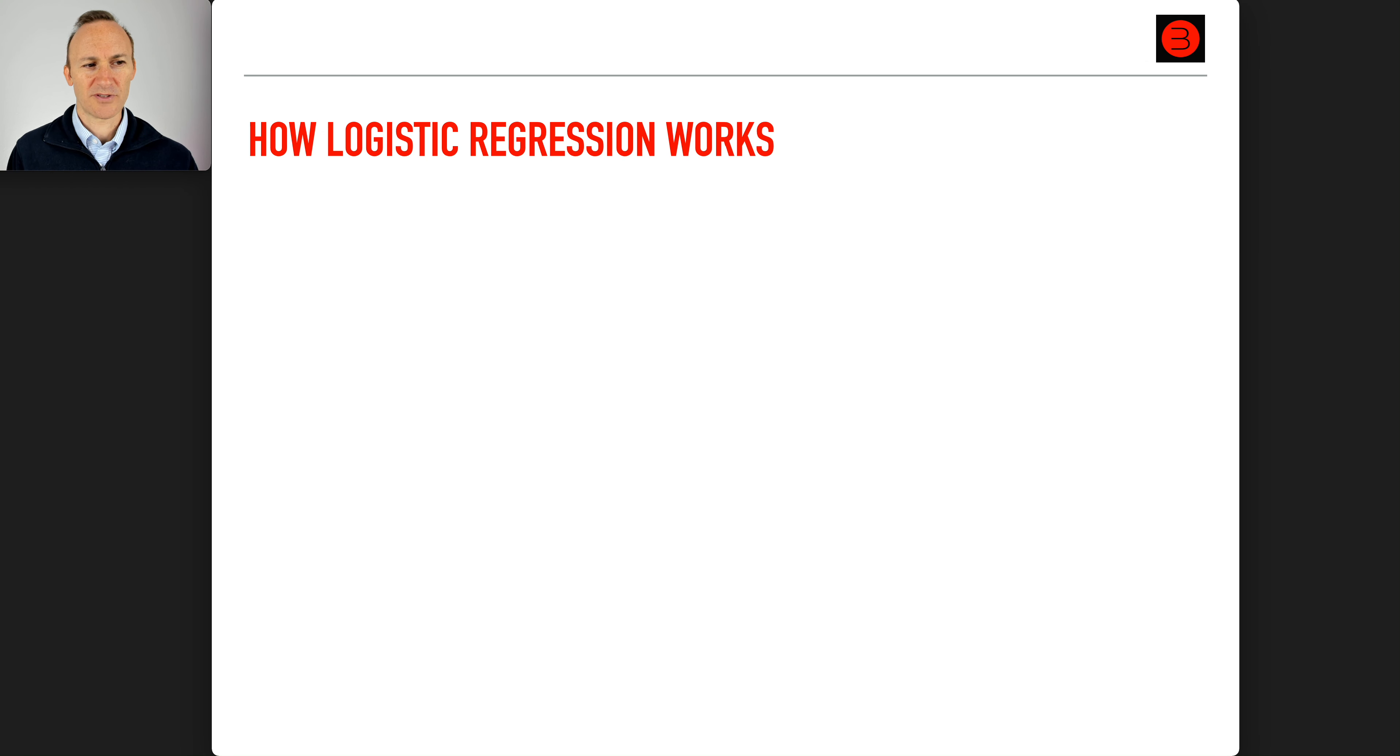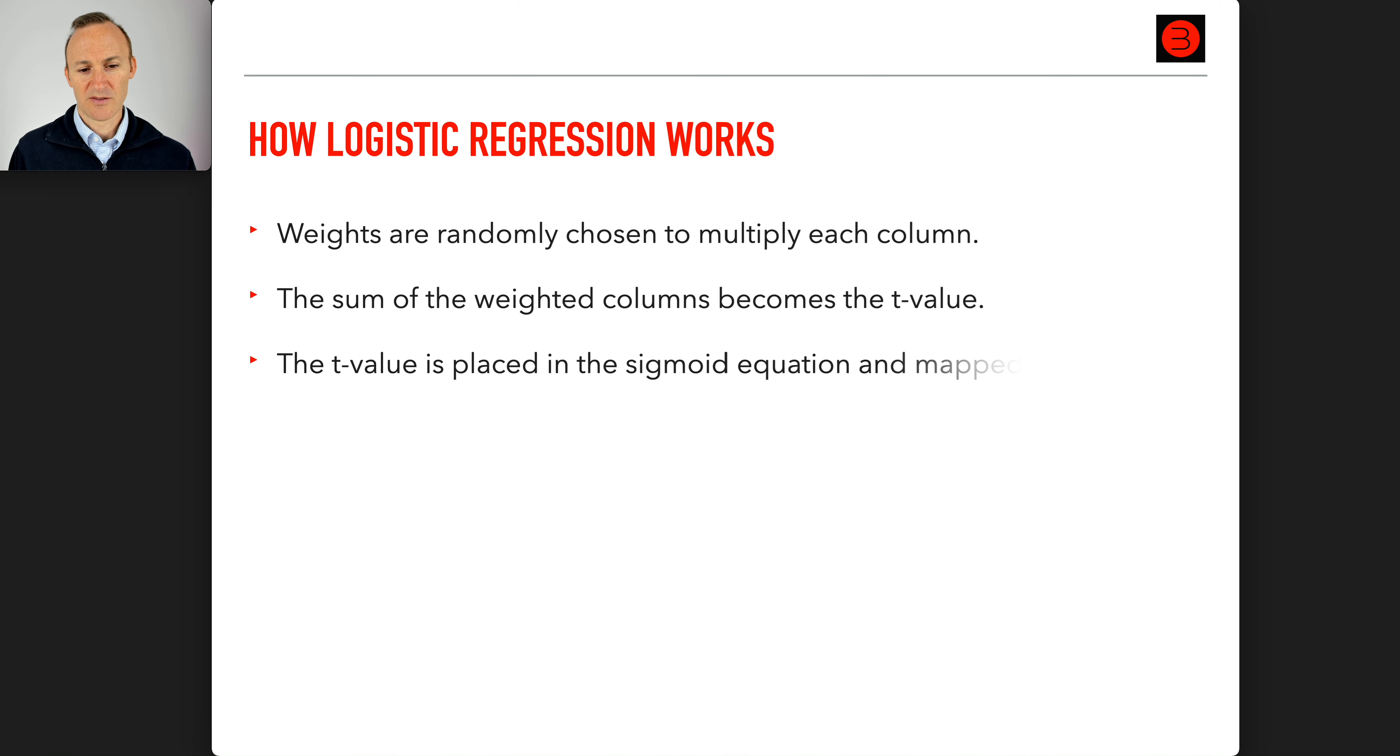Let's take a quick look at how logistic regression works. Weights are randomly chosen to multiply each column. The sum of the weighted columns becomes the t value. The t value is placed in the sigmoid equation to map to zero or one. I'm using t because that's what the graph used, but it could be any variable. The point is you put it in the sigmoid and map it to zero or one.